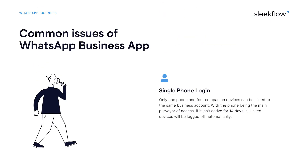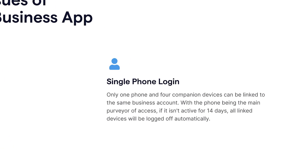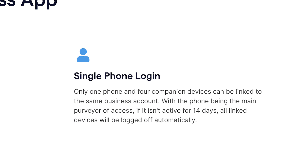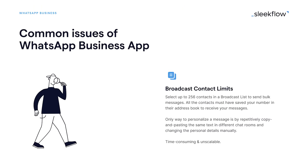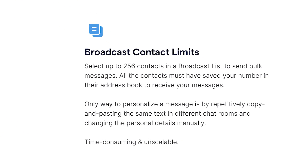Some common issues with the WhatsApp Business native app is that it has to be installed on one smartphone and up to four companion devices can be linked to the same account. But if the original smartphone that has WhatsApp installed isn't active for 14 days, all linked devices will be logged off automatically. Also, you can only select up to 256 contacts in a broadcast list to send bulk messages, and all the contacts must have saved your number in their address book to receive your messages. The only way to personalize a message is by repetitively copy and pasting the same text in different chat rooms and changing the personal details manually.